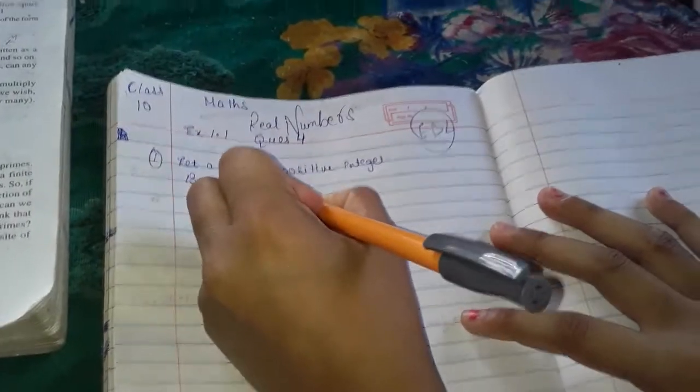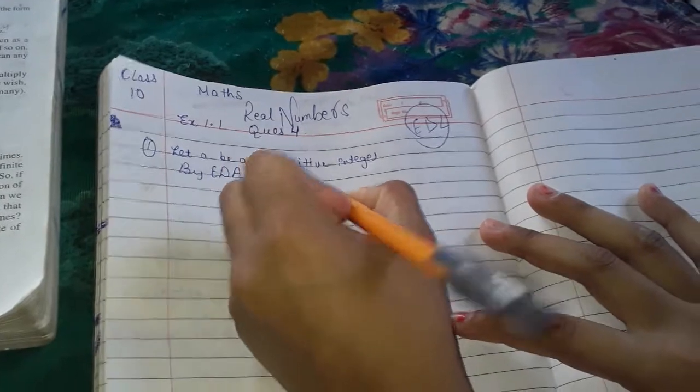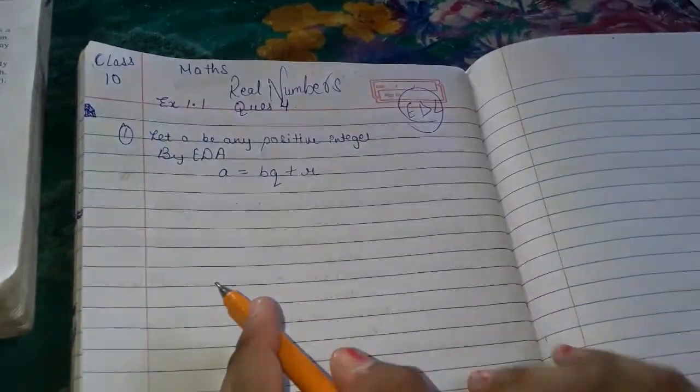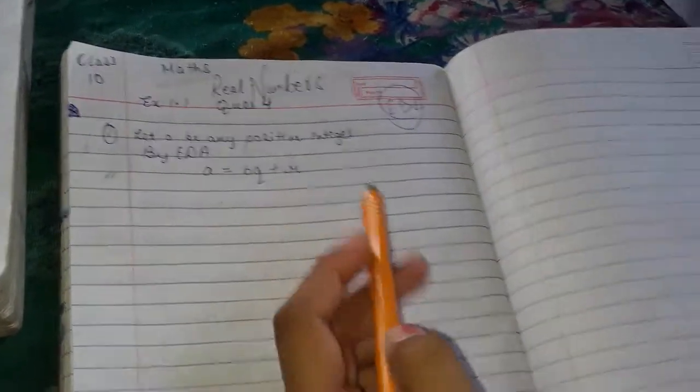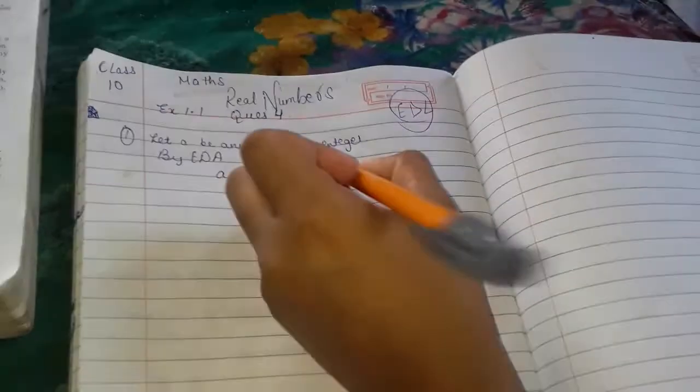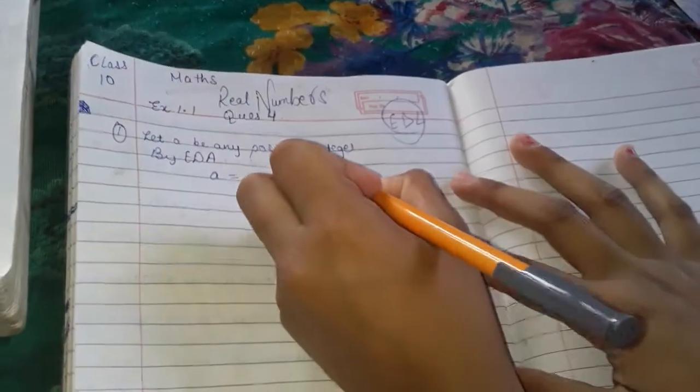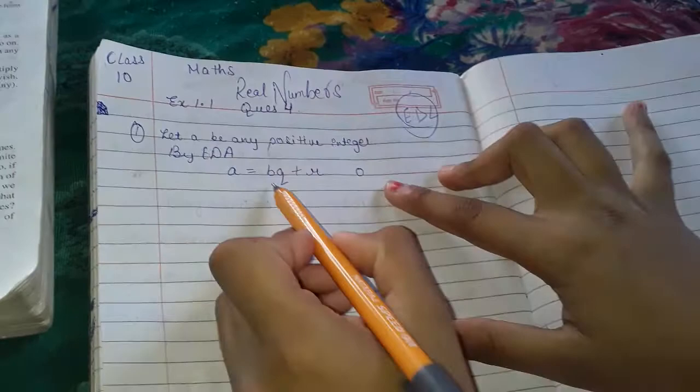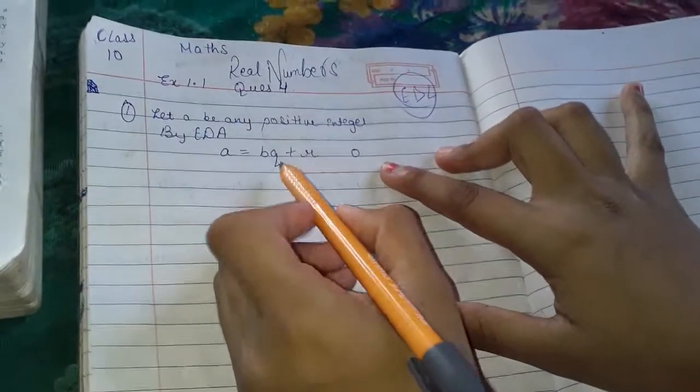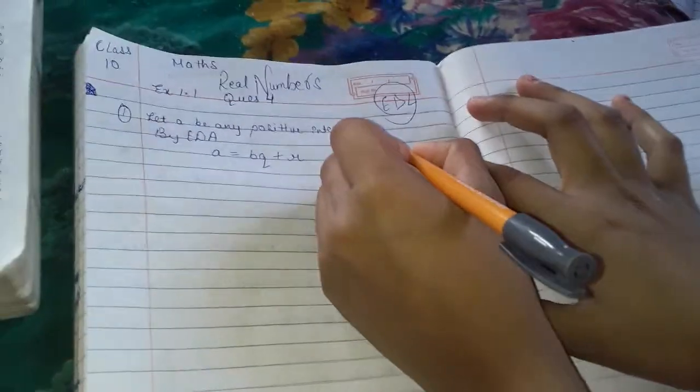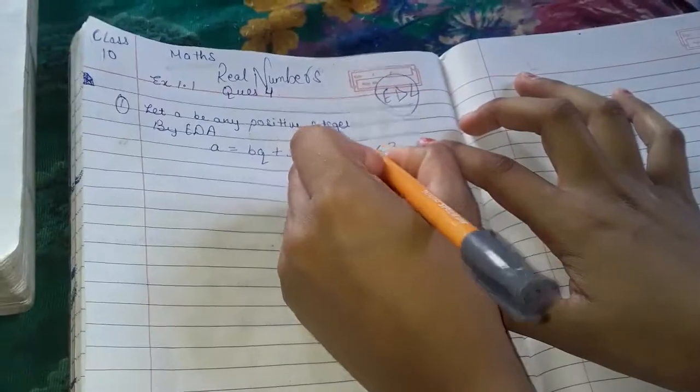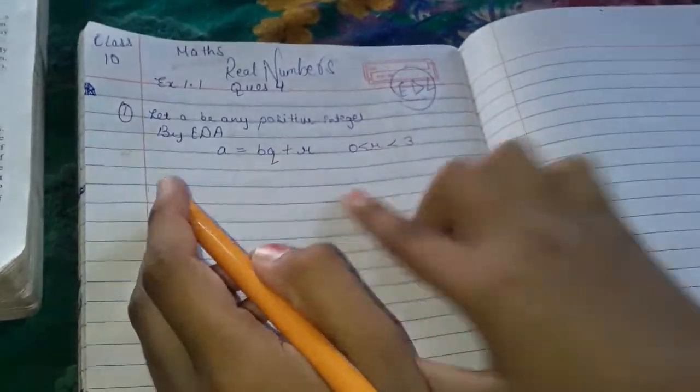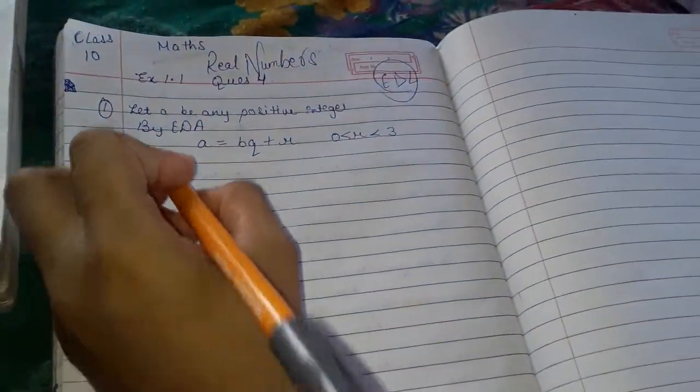A is equals to BQ plus R, where A is dividend, B is divisor, Q is quotient, and R is remainder. The constraint is 0 is less than or equal to R, which is less than B. So remainder is always smaller than divisor.